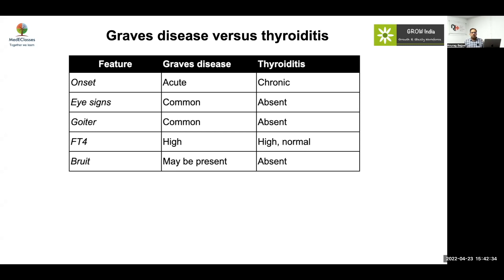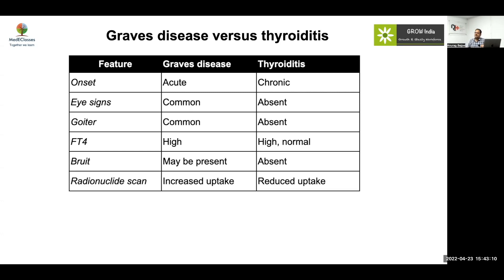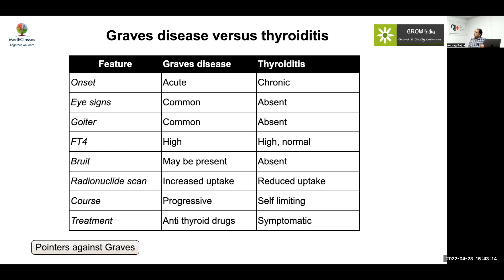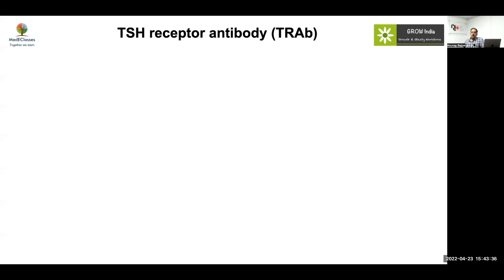The most common cause of thyrotoxicosis with eye signs is Graves' disease. Even if eye signs are absent, it can still be Graves' disease — absent eye signs do not definitively indicate thyroiditis rather than Graves'. A radionuclide scan will clarify the picture. Pointers against Graves' include no goiter and age less than one year. In infants under one year, think twice before diagnosing Graves' — it may be maternal passage of thyroid antibodies or a TSH receptor activating mutation.